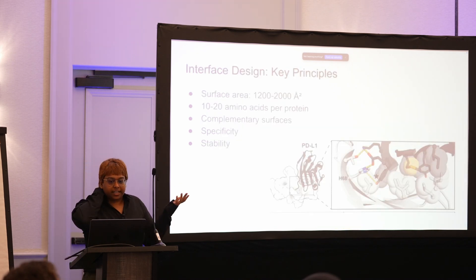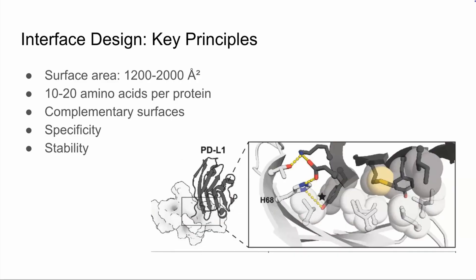So the basic principles of interface design. When two proteins interact, they're generally burying about 1200 to 2000 square angstroms of surface area. So that's about the size of a small protein domain. You can imagine it as almost folding of two domains next to each other.